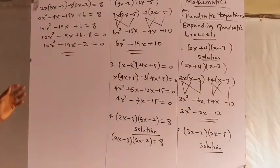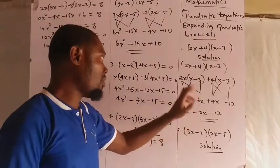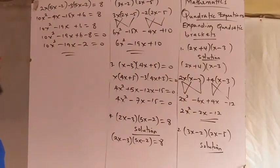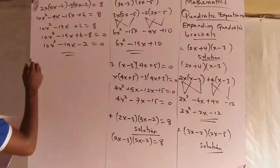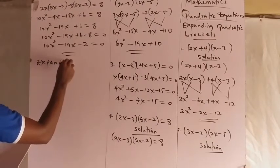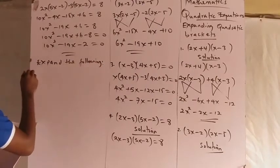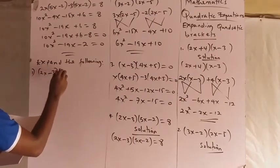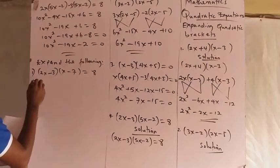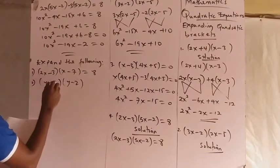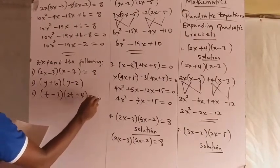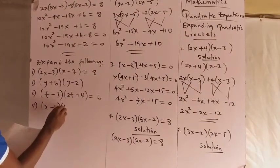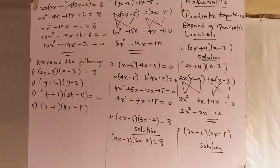So today we dealt with expanding quadratic brackets. Now carefully do these yourself — expand the following: (1) 2x − 3 into x − 7 = 8; (2) y + 6 into y − 2; (3) t − 3 into 2t + 4 = 6; (4) x − 1 into 4x − 5. Carefully expand these problems and see if you get your answers correctly. I'll see you in the next class. Thank you.